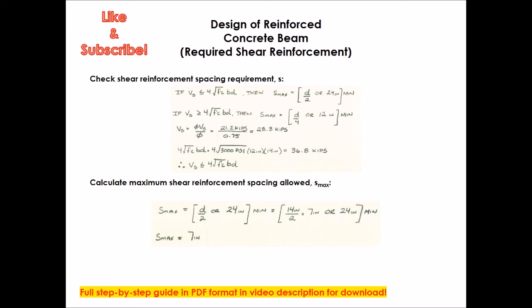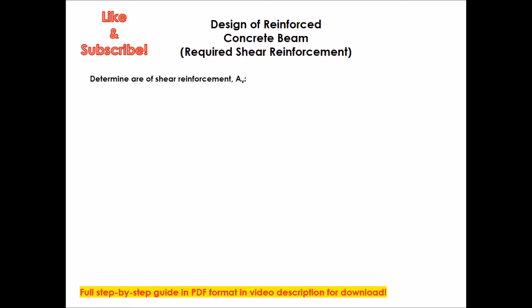The next thing you want to do is to determine the area of shear reinforcement, Av. And this is going to bring you up to the conclusion of your design. So this is also a very simple equation. Av equals phi Vs times s spacing divided by phi times d times fyt. So that's 21.2 kips, which we calculated before, times 7 inches, which is the spacing, divided by phi, which is 0.75 times 14 inches, depth of tension reinforcement, times the 60 ksi. Make sure that your equation is agreeing as far as units. And that equals 0.24 inches squared.